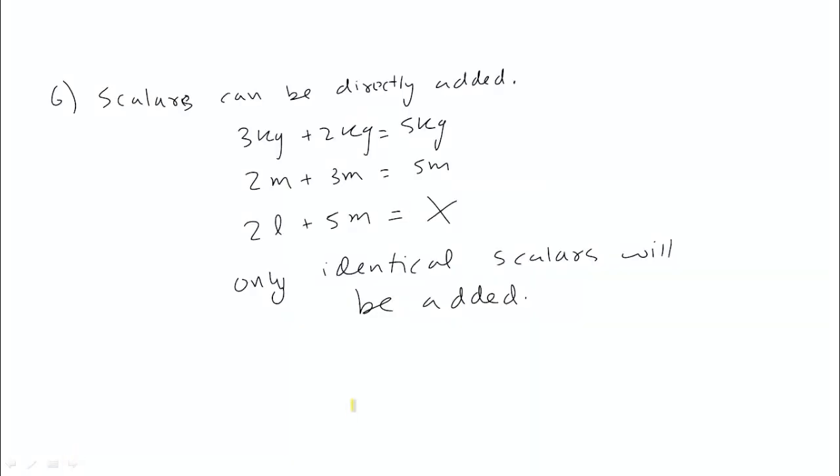One more property we discuss: Scalars can be directly added. 3 kg plus 2 kg is definitely 5 kg. 2 meter plus 3 meter is 5 meter. But 2 liter plus 5 meter - you cannot add them. Only identical scalars can be added. So these are the basic properties of scalars which you should know.